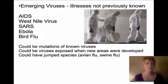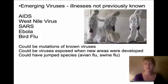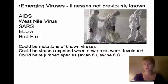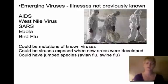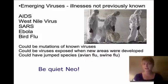We also have emerging viruses — illnesses that were not previously known. These are fairly new viruses: the AIDS virus, West Nile virus, SARS, Ebola, and the bird flu. One way these develop is through mutation of a known virus. For example, we're very familiar with the flu, but mutations can create a new version of it.